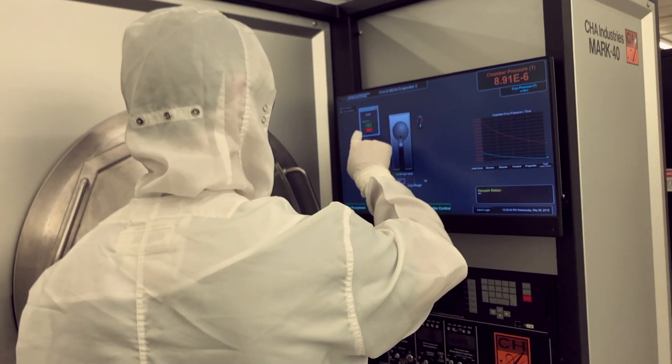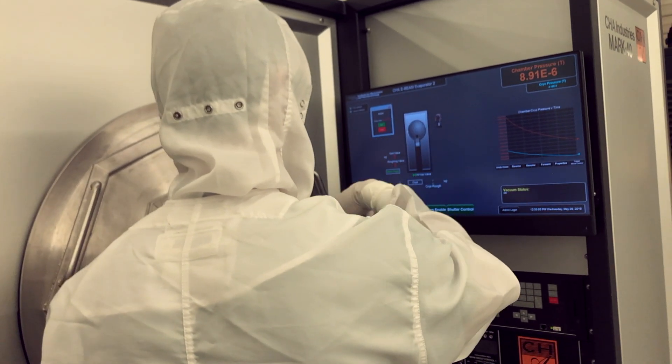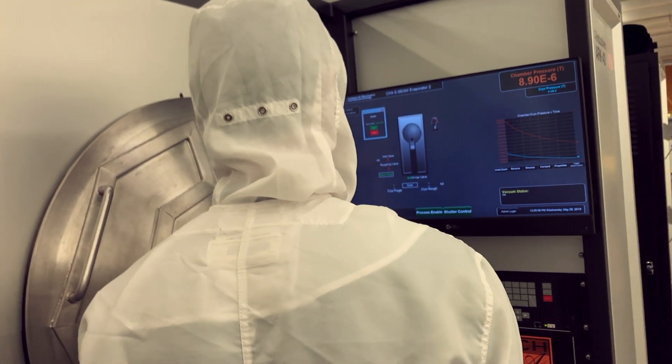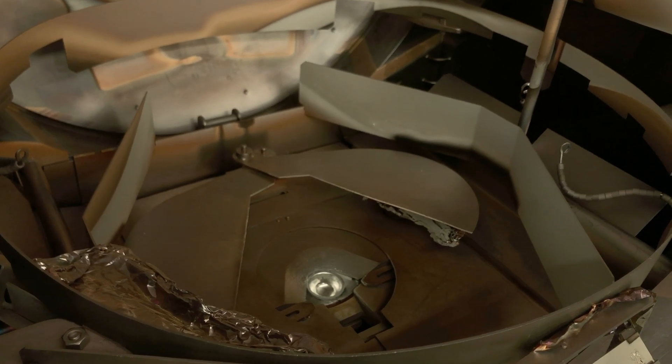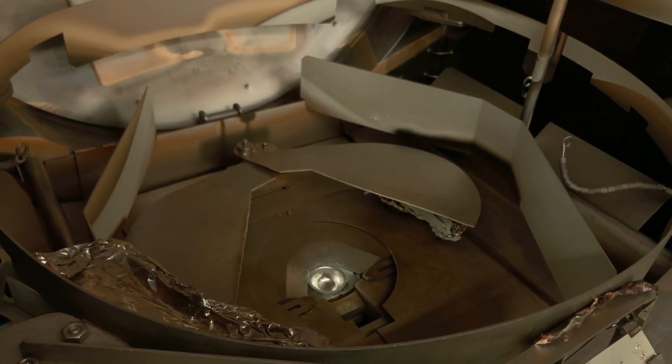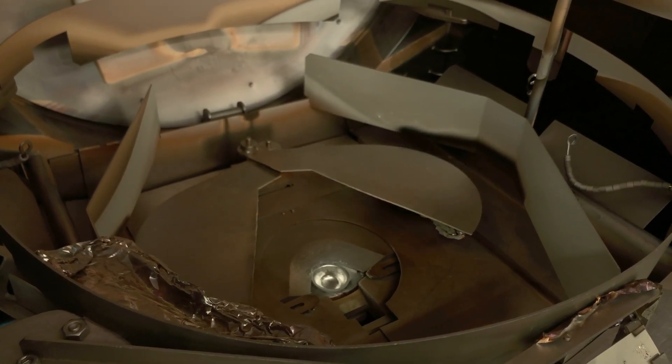The shutter is closed while the metal that is being evaporated is heated. Once the metal is evaporating at the correct rate, the shutter is opened, exposing the sample to evaporation. Once the desired amount of metal has been deposited, the shutter is closed to prevent further deposition.